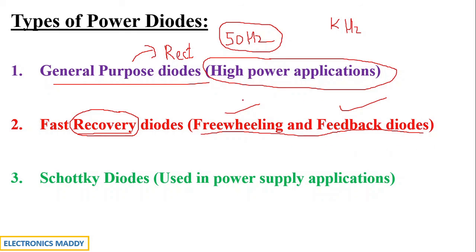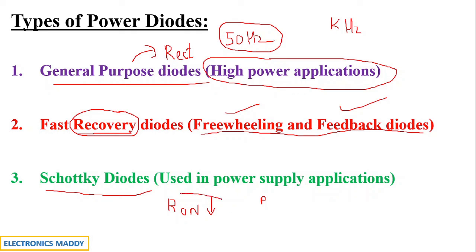Schottky diodes contain a metal combined with a normal n-type junction material, where the metal acts as the p-type material. They are used in SMPS applications and have a lower on-state resistance drop compared to other devices. This is because using a metal instead of a normal p-type material significantly reduces the on-state resistance.